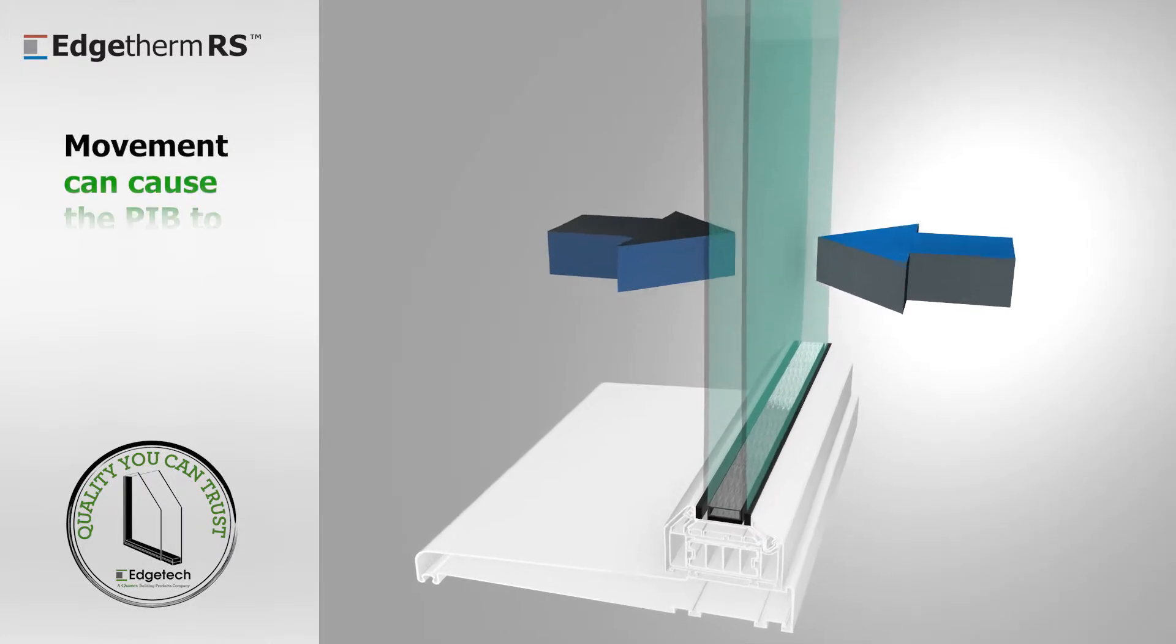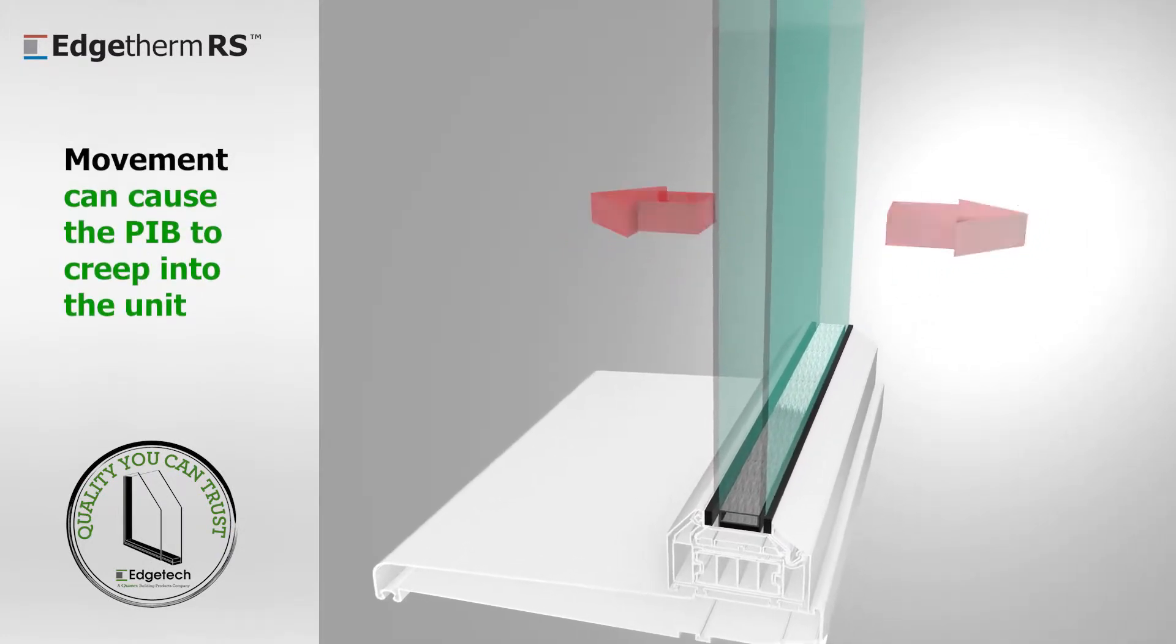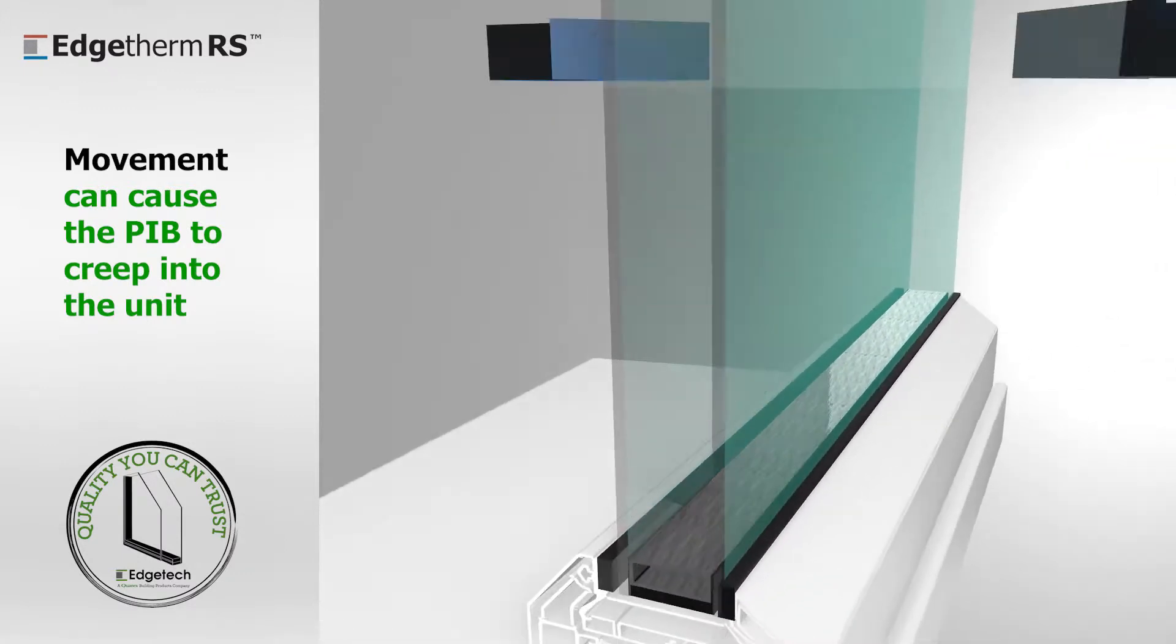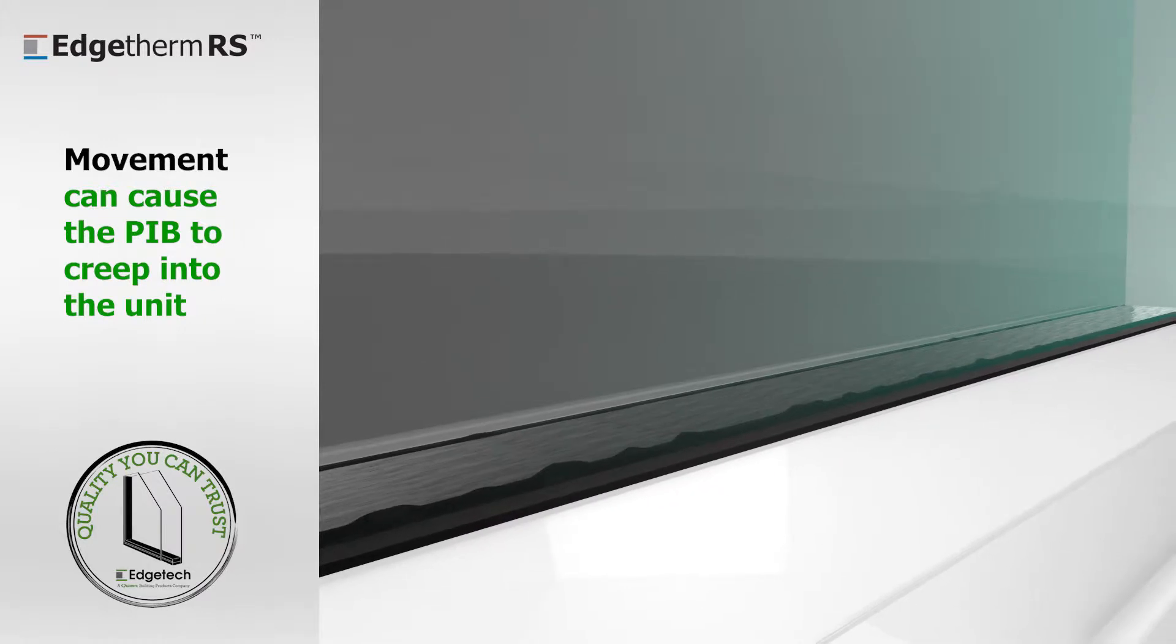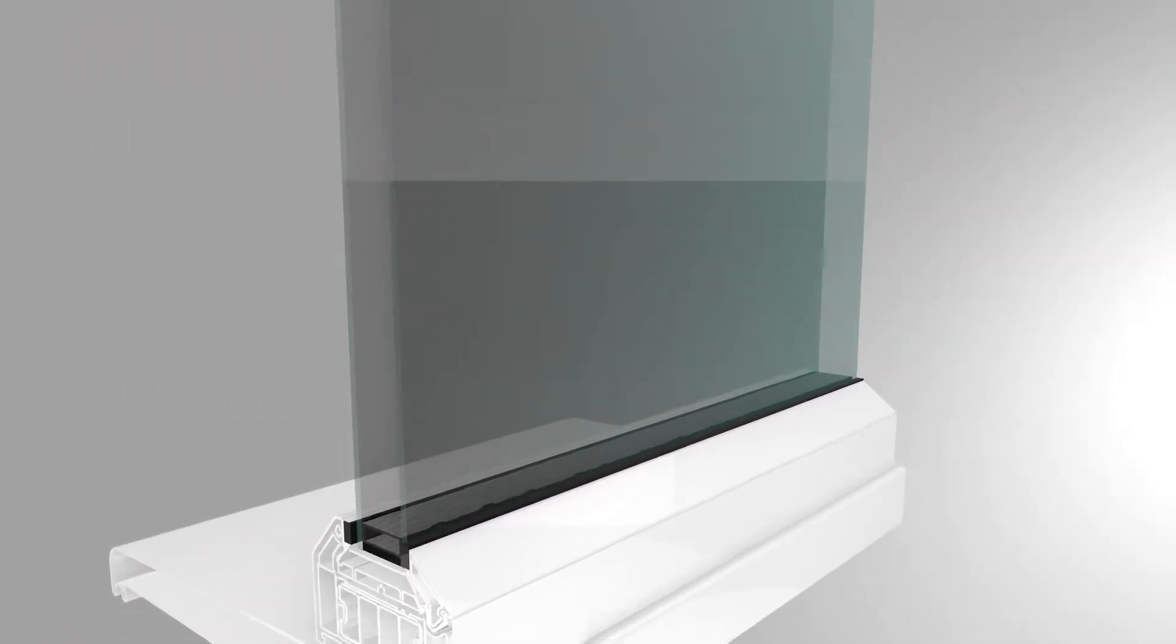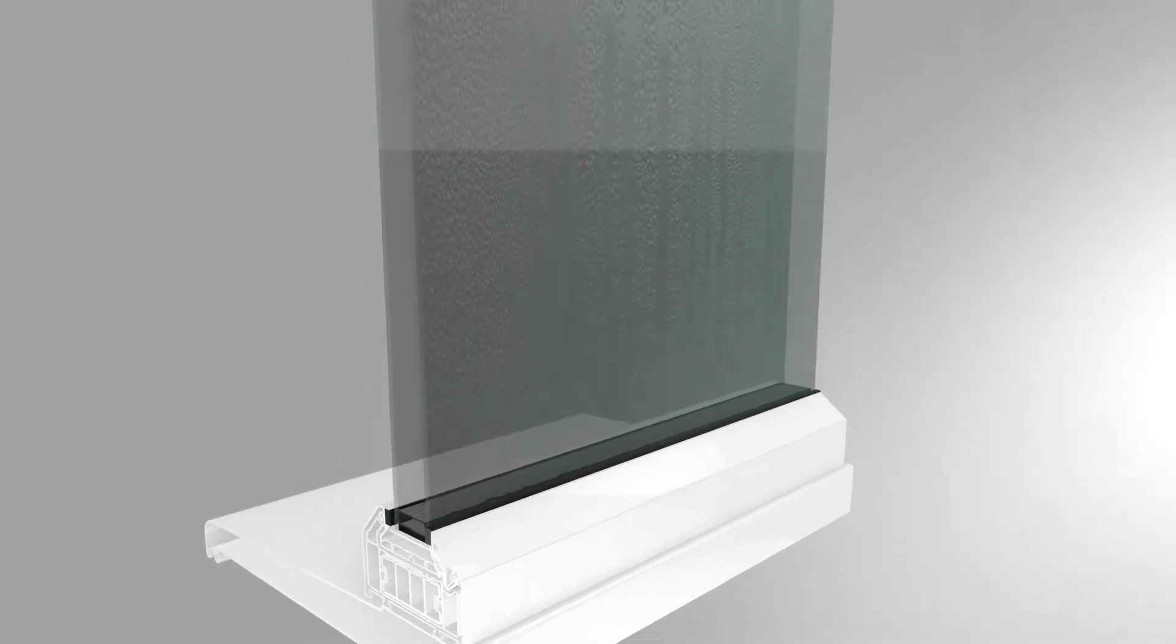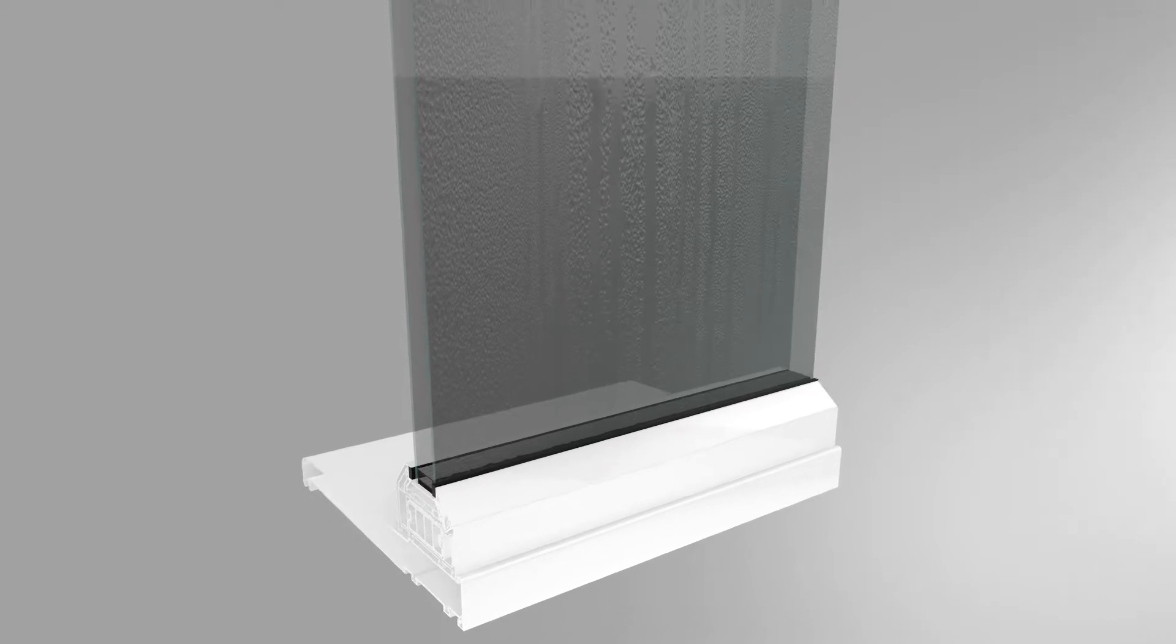Movement naturally occurs in sealed units due to heating, cooling and wind pressure. If PIB is not contained, this pumping action can over time cause the PIB to creep into the unit. As the PIB bead plays an important role in the durability of a unit, any movement could cause a breakdown of the edge seal and premature unit failure.